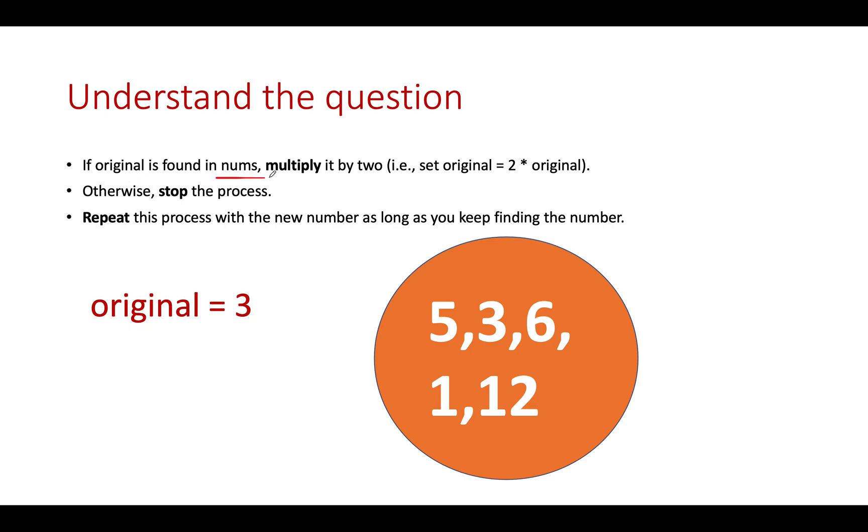Let's try and understand the rules that were specified there. If original is found in nums, we multiply it by 2, otherwise we stop the process. We need to keep on doing this process till the time this condition is met and finally we need to return the updated value of original. So let's take the same example that was specified in the question. And here we have the original as 3 and the input array is 5, 3, 6, 1, 12.